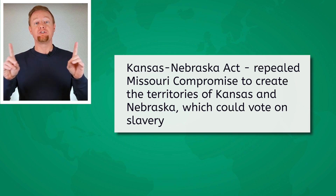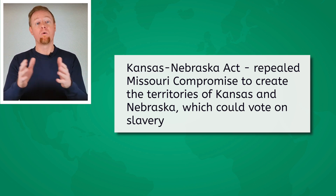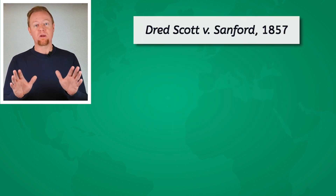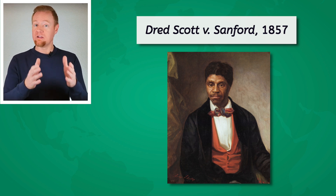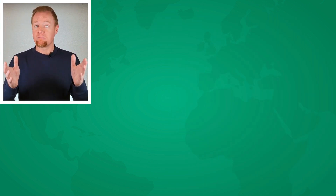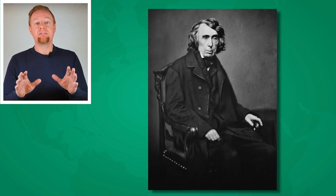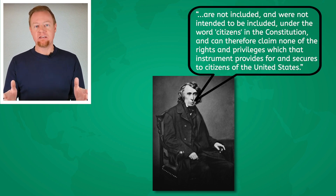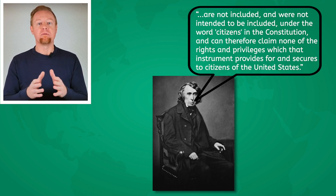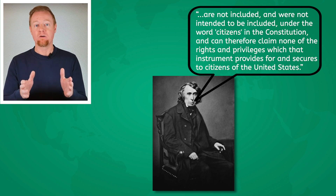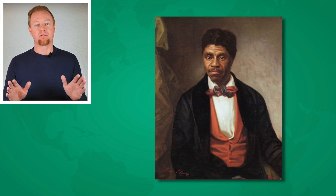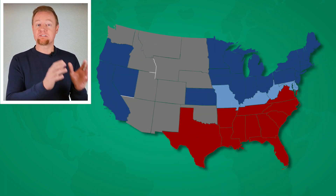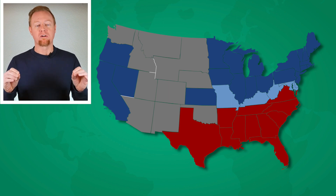Then came the Kansas-Nebraska Act. Passed in 1854, it repealed the Missouri Compromise and created two new territories, both of which could now vote to become slave or free. And then came the 1857 Dred Scott v. Sanford decision. Dred Scott, an enslaved person who had been taken into a free territory by his owner, argued that living in a free territory released him from slavery. The Supreme Court disagreed. Chief Justice Roger Taney wrote in the opinion that black people are not included and were not intended to be included under the word citizens in the Constitution, and can therefore claim none of the rights and privileges which that instrument provides for and secures to citizens of the United States. Basically, black people would never be citizens and did not have any rights under the law. All these factors contributed to the lines between Southern Democrats and the new Northern Republican Party being firmly drawn along the issue of slavery.